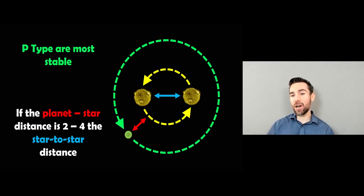Now, P-type are probably the most stable. And if they're far enough from the stars, then they don't receive a strong gravitational tug or perturbation that will destabilize them. So as long as they're far enough away, they can be quite stable.